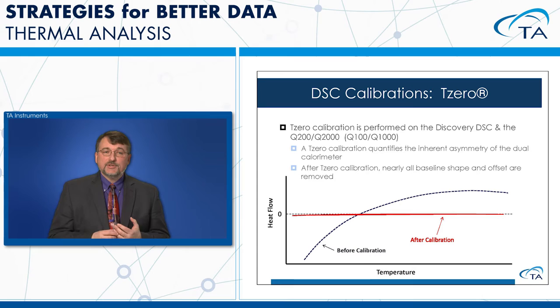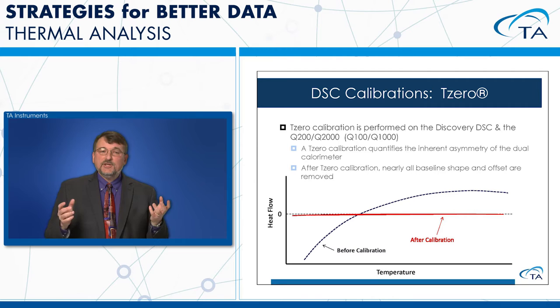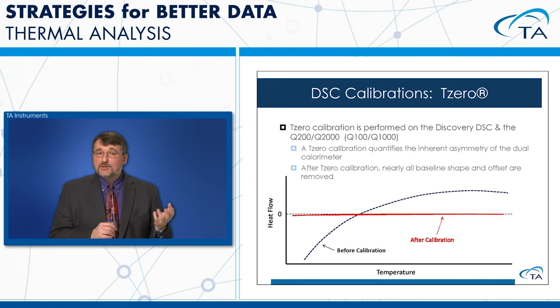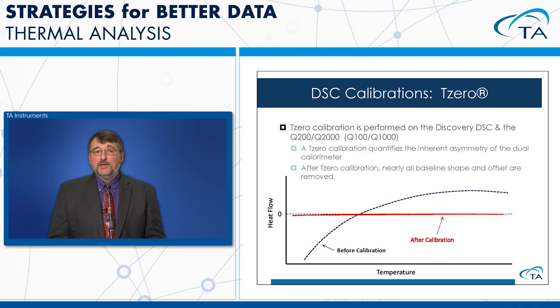The T0 calibration is not just a rotation or subtraction — it measures and quantifies any inherent asymmetry in the DSC cell, then compensates for that. Before calibration looks similar to other methods, but after T0 calibration the result is a flat line at zero. That's really what it should be: a flat line at zero for an instrument that's performing properly.